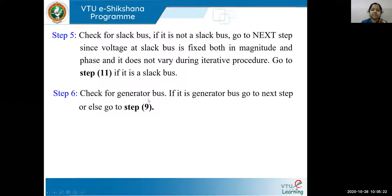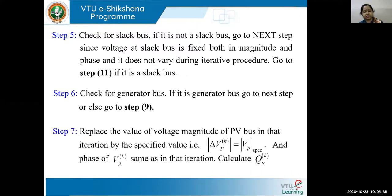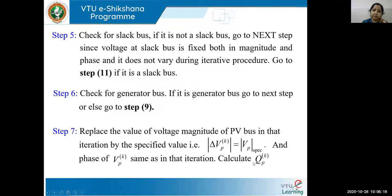The next step says: check for generator bus. If it is a generator bus, go to the next step; otherwise go to step number nine. If it is a generator bus, replace the magnitude of the PV bus voltage in that iteration with the specified value, keeping the phase of V_P^K the same for that iteration. Then calculate Q_P^K. For a PV bus, you cannot take a flat voltage profile because the voltage has already been specified — P and V values are specified. So the very first thing, once you know it is a PV bus, is to calculate the reactive power at that bus and check the limits.